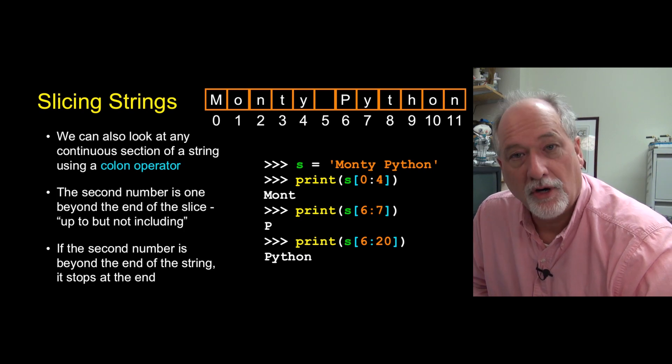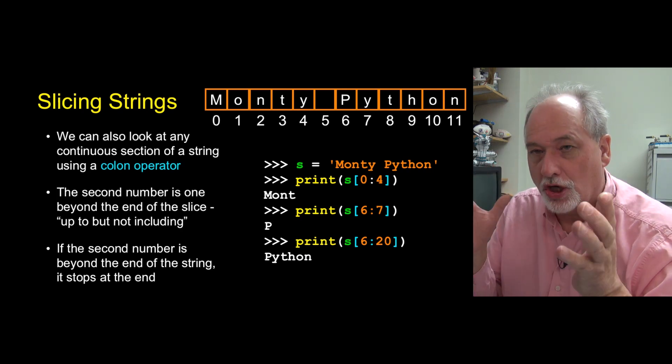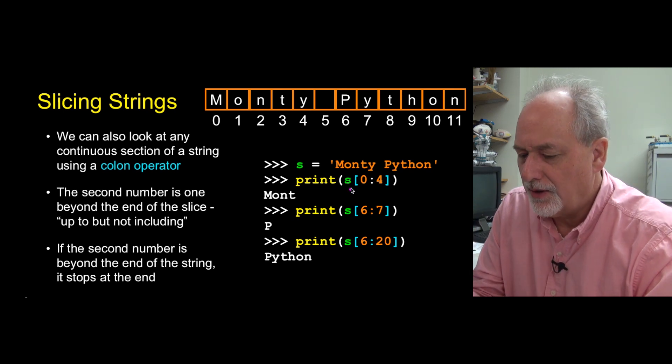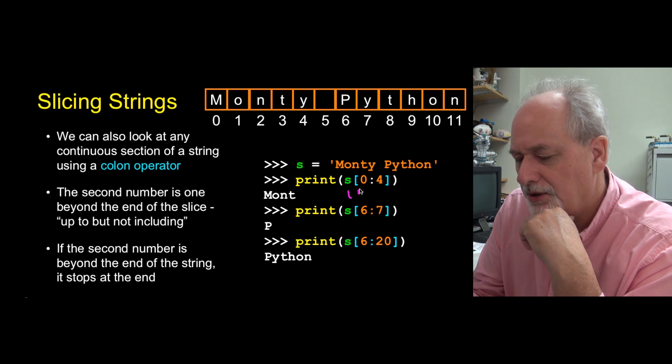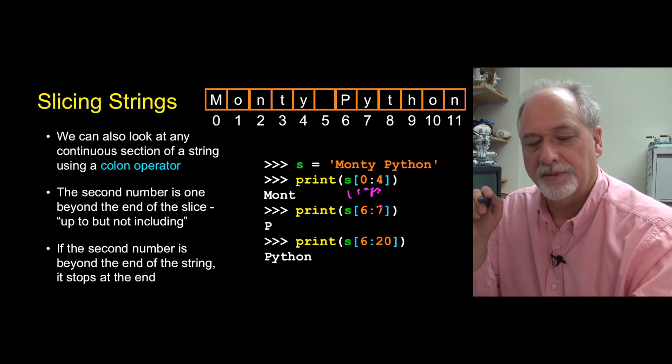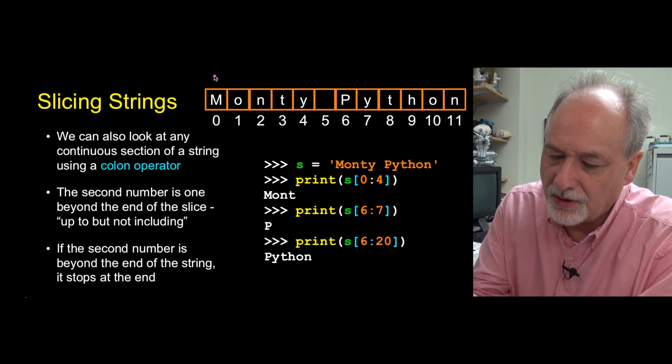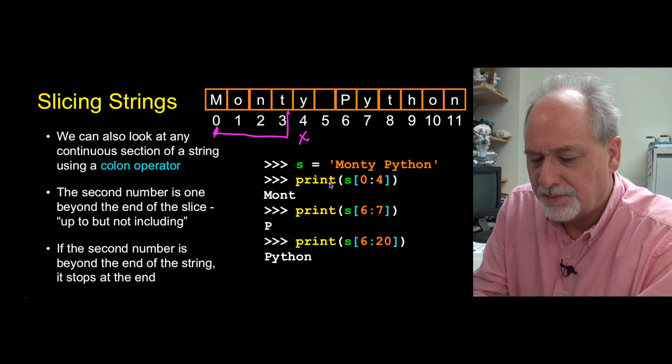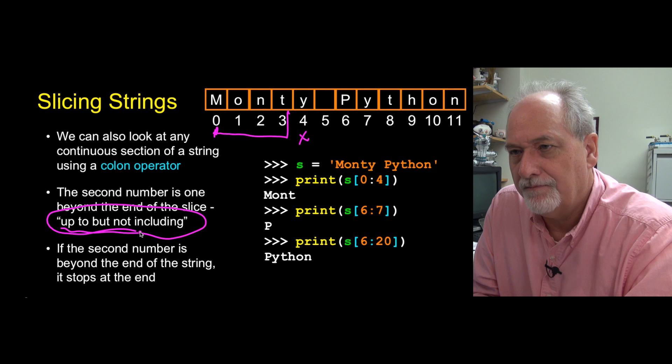So now we're going to dig into strings a bit. We've already looked at how you can pull out a single character in a string, and now we're going to look at what we call slicing - pulling chunks of a string out. We're going to use the square bracket operator. S sub zero through four, that's how I read this. I look at the colon as through, the brackets as sub. S sub zero through four says start at position zero and go up through but not including four. We don't include four, so that's probably the hardest part - up to but not including.